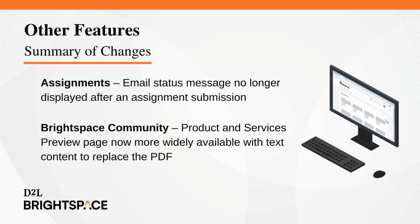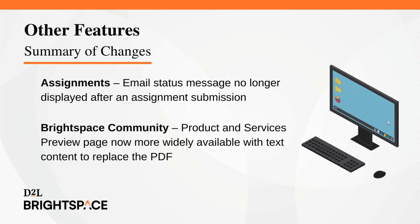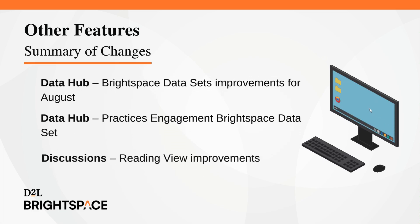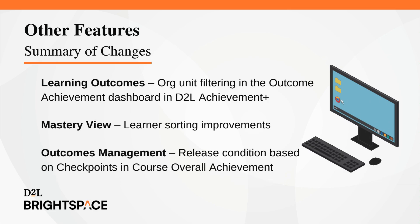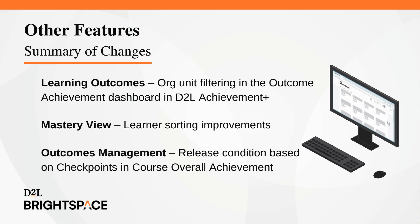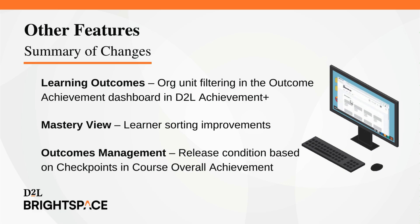Finally, let's take a look at the other features for this month's release. Email status message no longer displayed after an assignment submission in Assignments. Product and Services Preview page now more widely available with text content to replace the PDF in Brightspace Community. With DataHub, Brightspace Dataset improvements for August as well as Practices Engagement Brightspace Dataset. Reading View improvements now in Discussions. With Learning Outcomes, org unit filtering in the Outcome Achievement Dashboard in D2L Achievement Plus, and learner sorting improvements in Mastery View. With Outcomes Management, a new release condition based on Checkpoints in Course Overall Achievement.